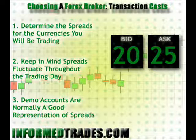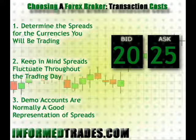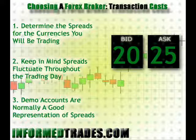The second factor to consider when evaluating transaction costs is what the spread is for the currency pairs you will be trading. You can calculate the spread in dollars by taking the value of a one-pip move in the currency that you are analyzing and multiplying it by the spread. It is important to keep in mind that the spread with many brokers will fluctuate throughout the day based on the liquidity of the currency pair you are trading and the volatility in the market at the time. With this in mind, it is important to consider the spreads during the time frames which you will be trading. Generally, I have found that the demo platforms are a fairly accurate representation of the type of spreads you will see on a live account.